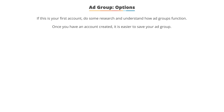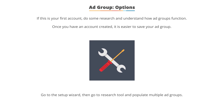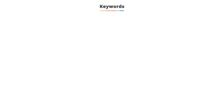Once you've created an account before and understand the process, it's easier to just save your first ad group — even if it's blank with no information — to quickly go through the setup wizard, then go to the research tool, do your research, and then populate multiple ad groups from the single tool at once.